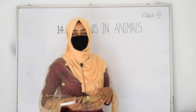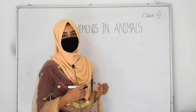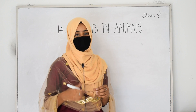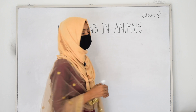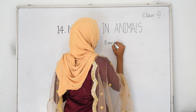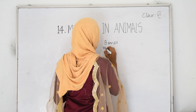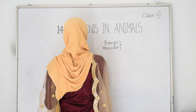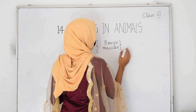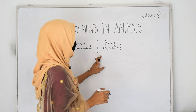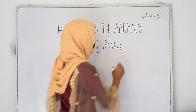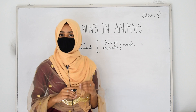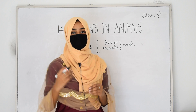These joints help the human body to move from one place to another. We can show different movements with the help of our bones and muscles. When we talk about movements in humans, these two things play a major role: bones and muscles. Bones and muscles work together to enable movement.